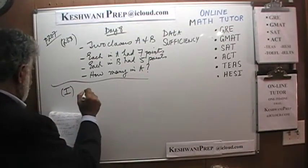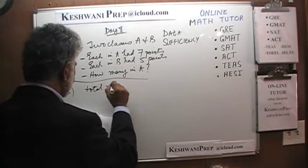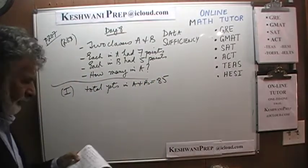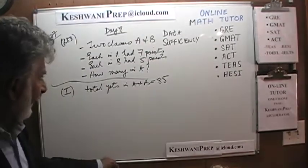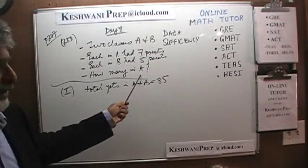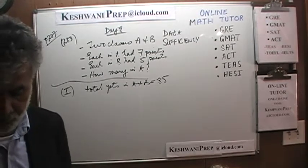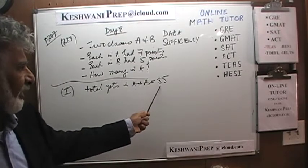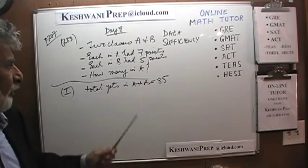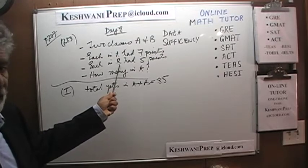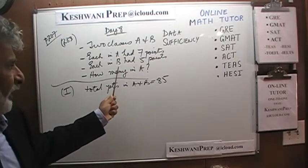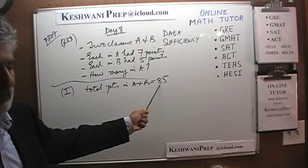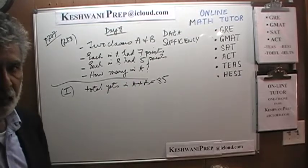The question is how many students are in class A. The first statement tells us that the total points in A and B equals 85. Simply knowing the total points does not help us figure out how many are in A — it is not enough. We have two unknowns: all we know is that 7A plus 5B equals 85. We cannot solve for two unknowns without more information.